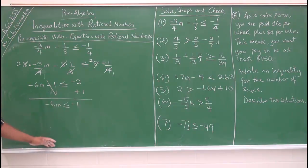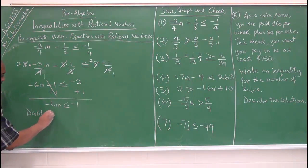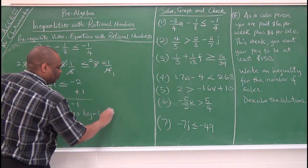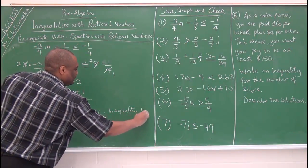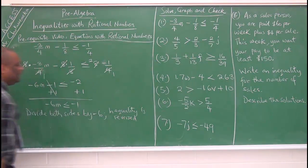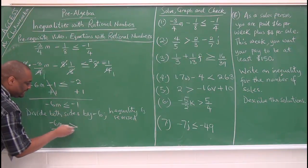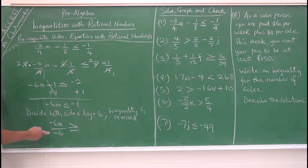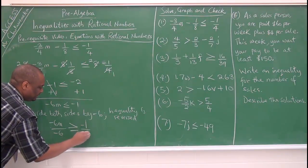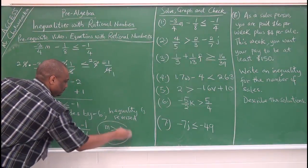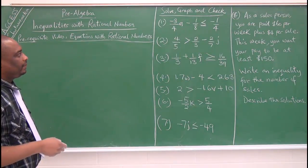Now we must divide both sides by negative 6. This is where the problem arises — when dividing by a negative value, the inequality is reversed. Immediately upon dividing by negative 6, change the sign to greater than or equal to. Negative 1 over negative 6 gives us m is greater than or equal to 1 over 6. Remember, negative divided by negative is positive.